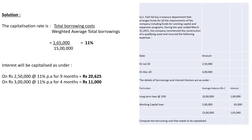This is a very easy solution — just remember the formula. The capitalization rate equals total borrowing cost divided by weighted average total borrowing. Total borrowing cost: long term loan interest 1,00,000 plus working capital loan interest 65,000 equals 1,65,000. Weighted average total borrowing is 10,00,000 plus 5,00,000 equals 15,00,000. So the capitalization rate is 1,65,000 divided by 15,00,000 which equals 11%.